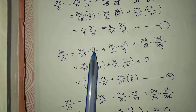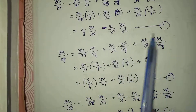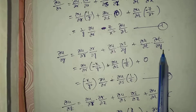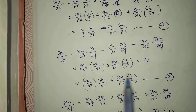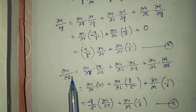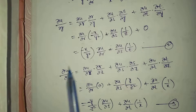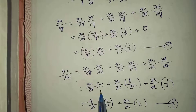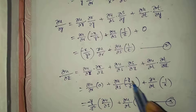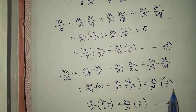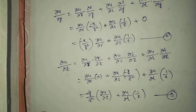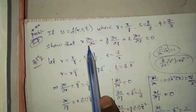By the chain rule: ∂u/∂y = (∂u/∂r)·(∂r/∂y) + (∂u/∂s)·(∂s/∂y) + (∂u/∂t)·(∂t/∂y). Substituting ∂r/∂y = -x/y², ∂s/∂y = 1/z, ∂t/∂y = 0, we get equation 2. Similarly, ∂u/∂z = (∂u/∂r)·(∂r/∂z) + (∂u/∂s)·(∂s/∂z) + (∂u/∂t)·(∂t/∂z). Substituting ∂r/∂z = 0, ∂s/∂z = -y/z², ∂t/∂z = 1/x, we get equation 3.